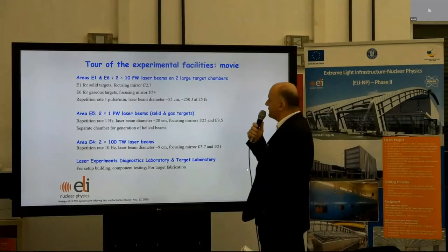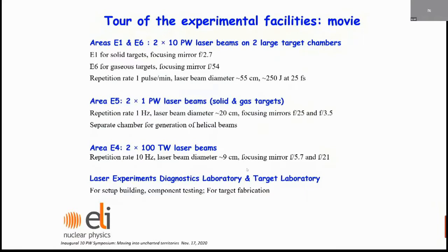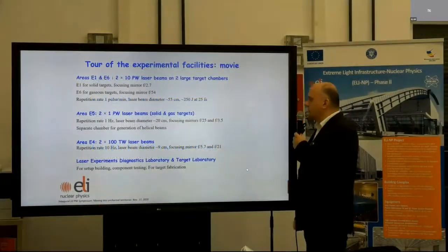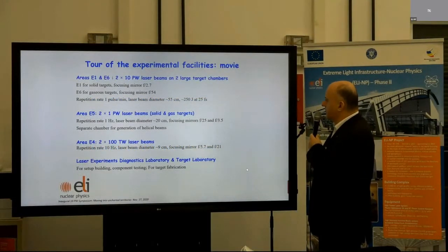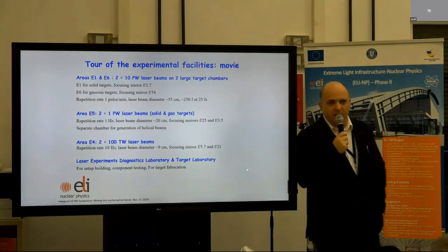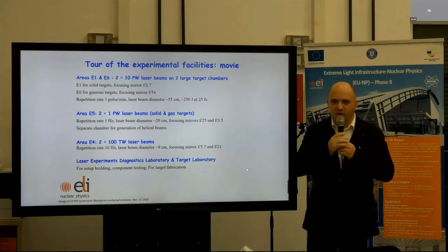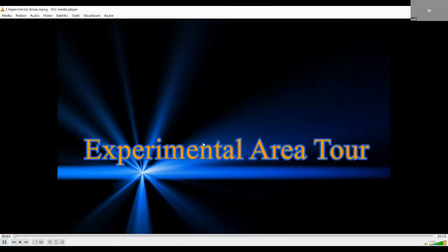I will show you a summary of the movie. We are going to show a movie of the experimental facilities, starting with the 10 petawatt experimental areas. We have areas E1 and E6 - E1 is for solid targets, E6 is for gaseous targets. Then we are going to move to the 1 petawatt experimental area E5, and you will see the target chambers. One is specifically for generating helical beams. Then we are going to show the 100 terawatt experimental area which we call E4. At the end, we are going to show the laser experiments diagnostics laboratory and the target laboratory. These are essential facilities for supporting our experiments.